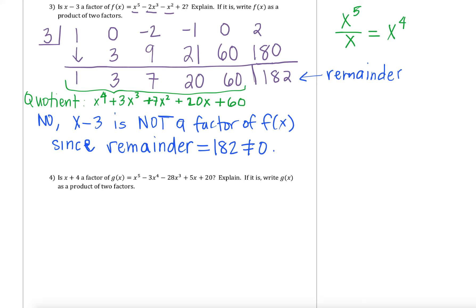Let's look at example four. We're asked: is x plus 4 a factor of g of x? And if it is, we'll write g of x as a product of two factors. Why don't you guys set up the synthetic division and then we'll check that together. Our synthetic division setup is going to have a negative 4, since that's the corresponding zero to the factor of x plus 4. When I list out our coefficients, our highest power is that x to the fifth with a 1. Then we have negative 3 with x to the fourth, then negative 28 with x cubed. The x squared term is missing so that gets a zero, and then we have a 5 and then a 20 for our linear and constant terms.